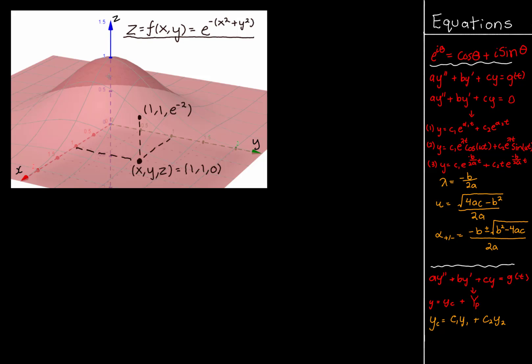A partial derivative is defined as the rate of change of the dependent variable with respect to one of its independent variables when all other independent variables are kept constant. In this case, z is defined in terms of x and y, so we could have ∂z/∂x where y is kept constant, or ∂z/∂y where x is kept constant. It's actually very easy to calculate partial derivatives algebraically, but I want to plot the surface so you can see how partial derivatives work visually.